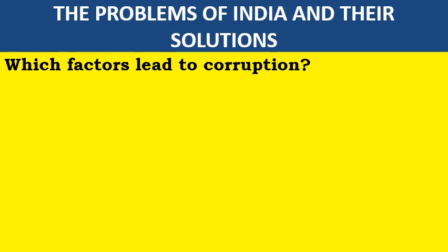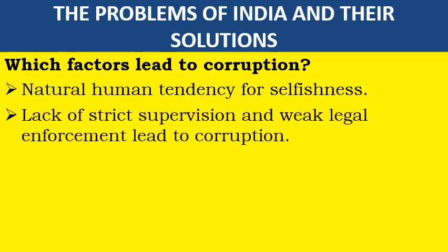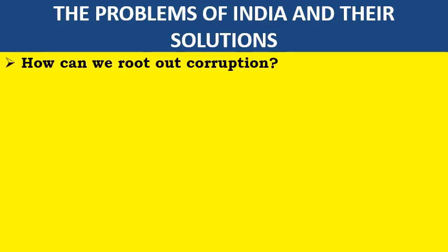Which factors lead to corruption? Natural human tendency for selfishness, lack of strict supervision, and weak legal enforcement lead to corruption.